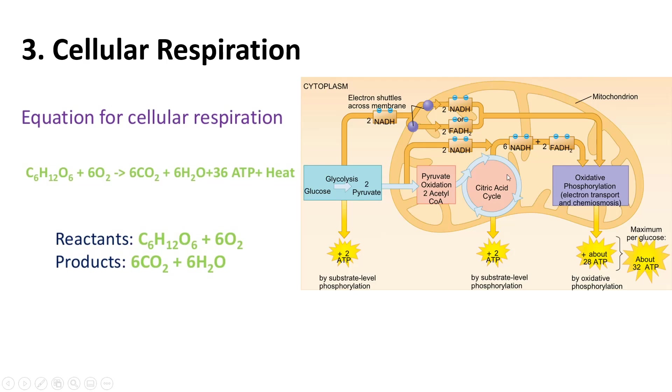Next is the Krebs cycle, also called the citric acid cycle. You use the smaller components made from glucose in order to create what we call electron carriers, which are seen here. These electron carriers are used in what's called the electron transport chain.